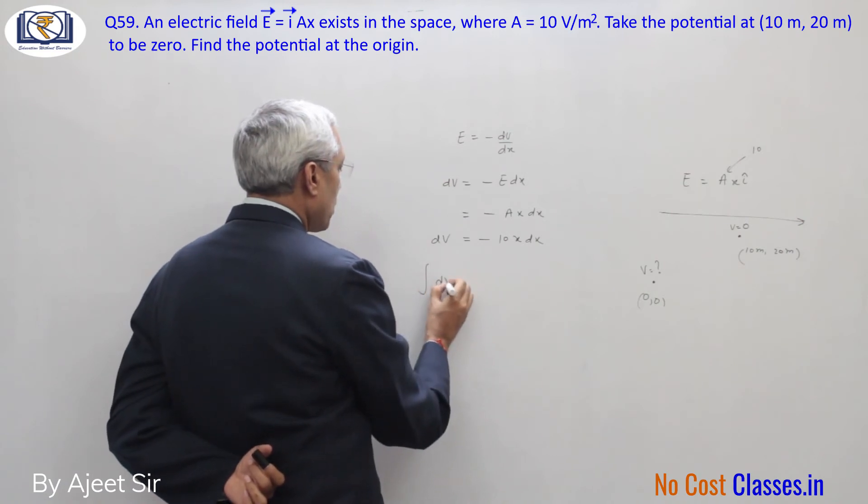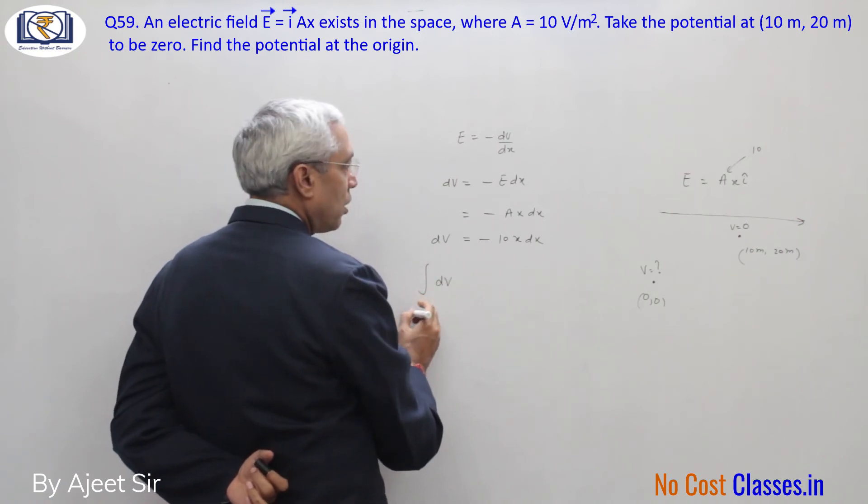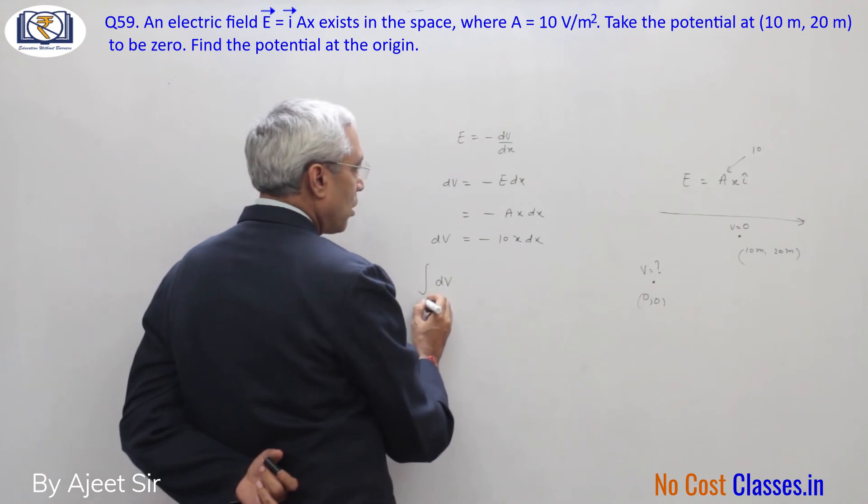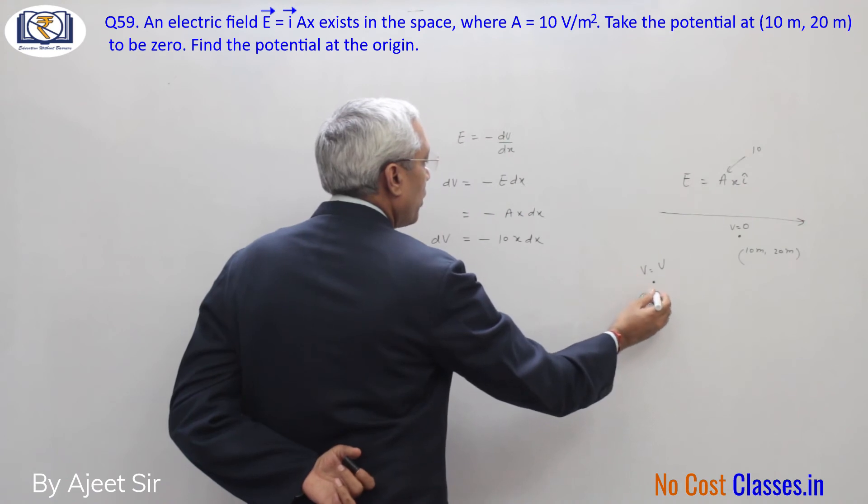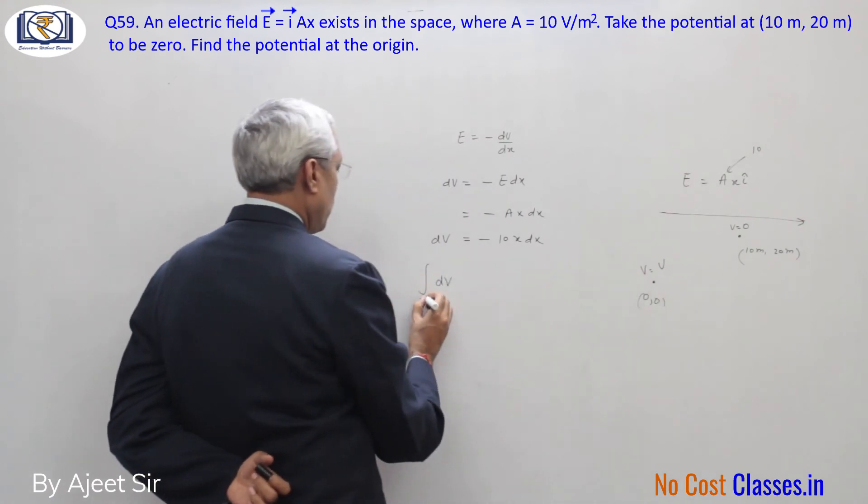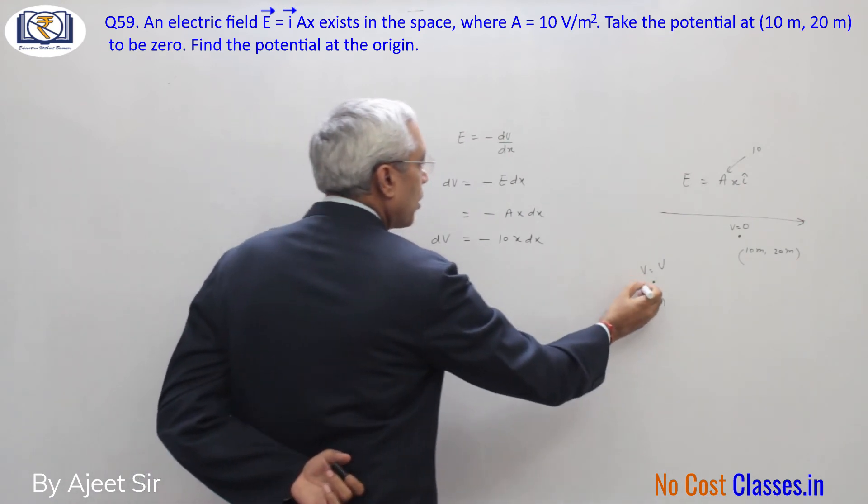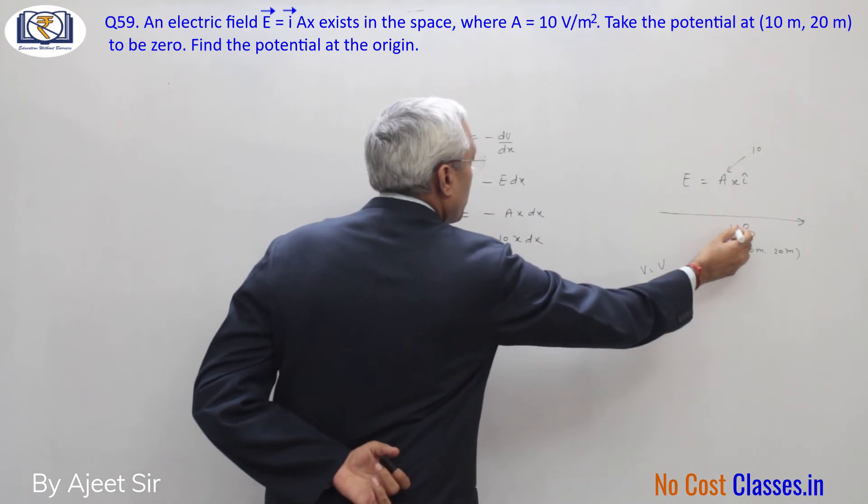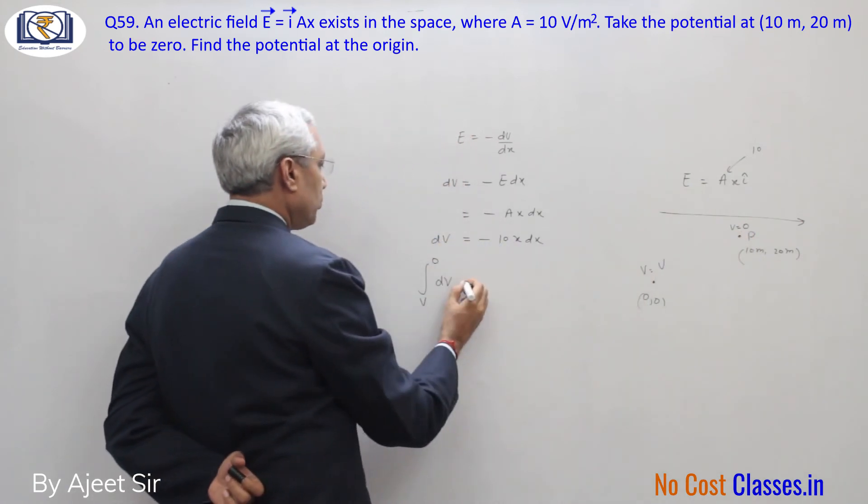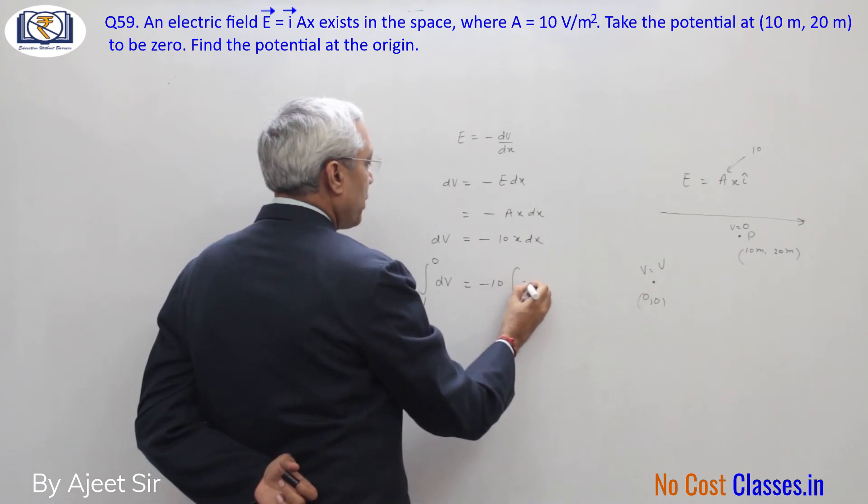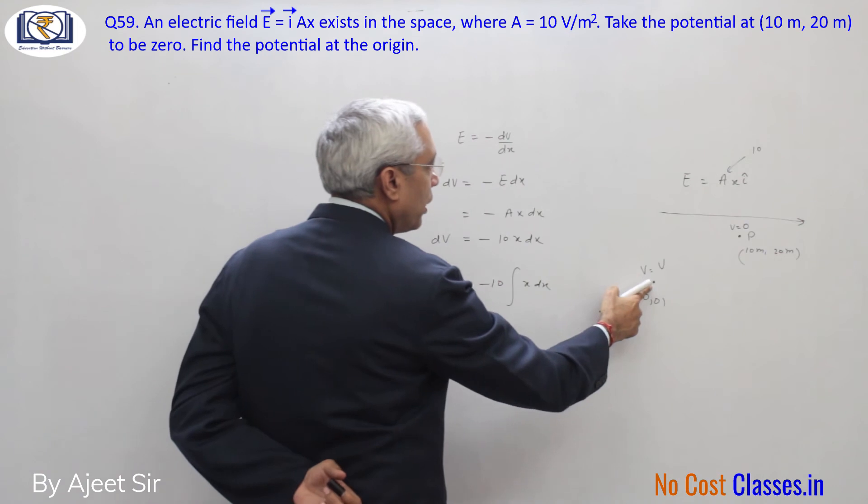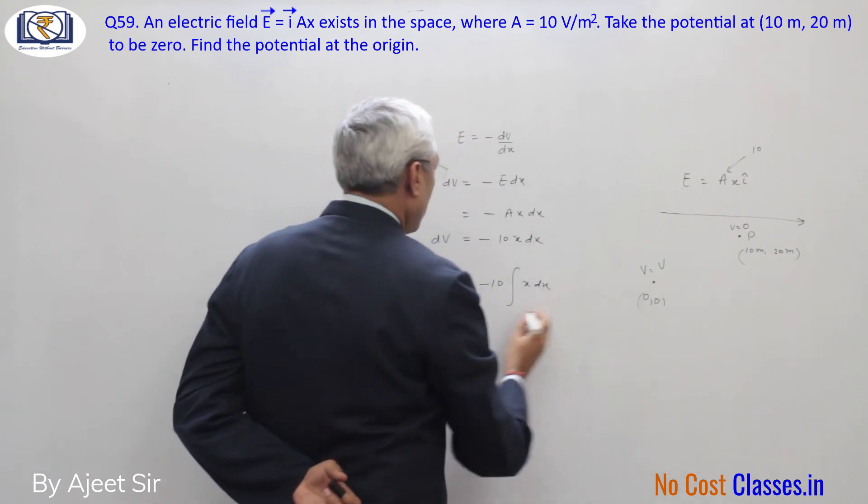Now we integrate it. V equals, here the value of V at the origin, so V naught, and here is the value at point P. So Vp is equal to minus 10 into x dx, and the limits for x are from 0 to 10.